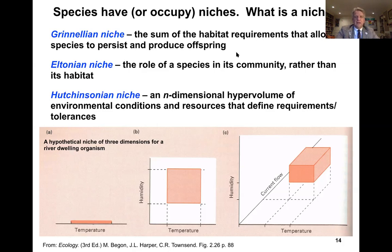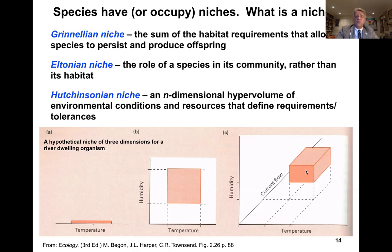Let's look at a hypothetical niche in three dimensions for a river-dwelling fish. We have temperature on the x-axis, humidity on the y-axis, and current flow on the z-axis. You can see this three-dimensional space where, given these environmental variables, this is where we find the organism occurring. This is the Hutchinsonian niche.